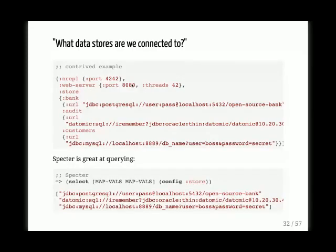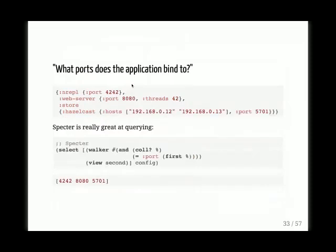You can answer more interesting questions like 'what data stores are we currently connected to?' — using Specter to get those URLs from the configuration, which is pretty handy. Or 'give me all the ports that my application is bound to' — Specter is really great at querying anything. The main point is: if it's a data structure, it's queryable, and that's great. Configuration is just data and it should be introspectable and queryable.